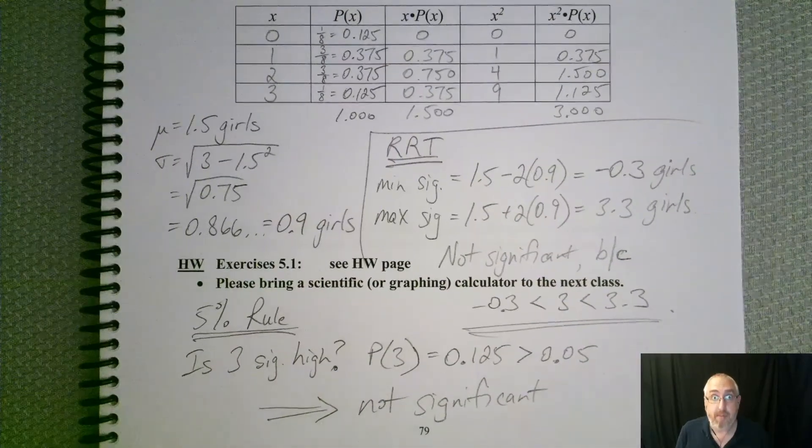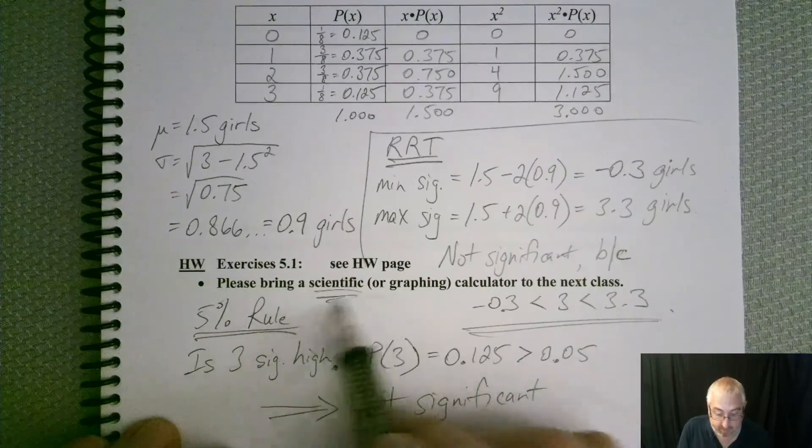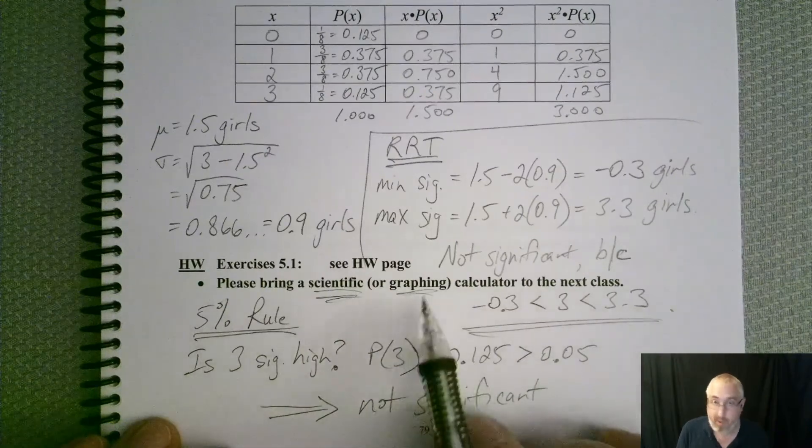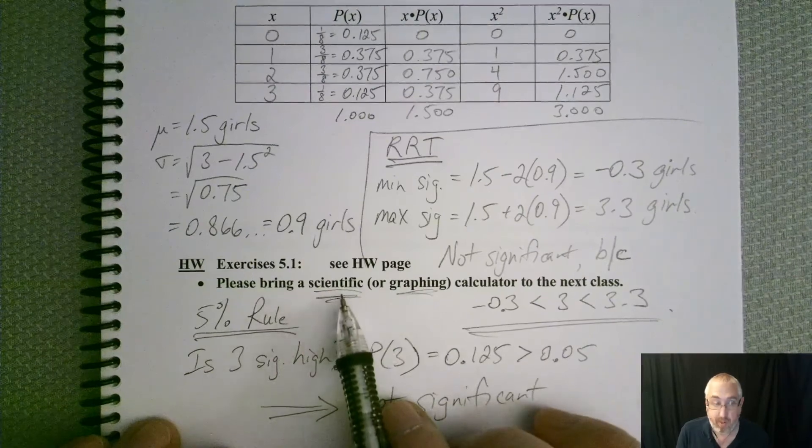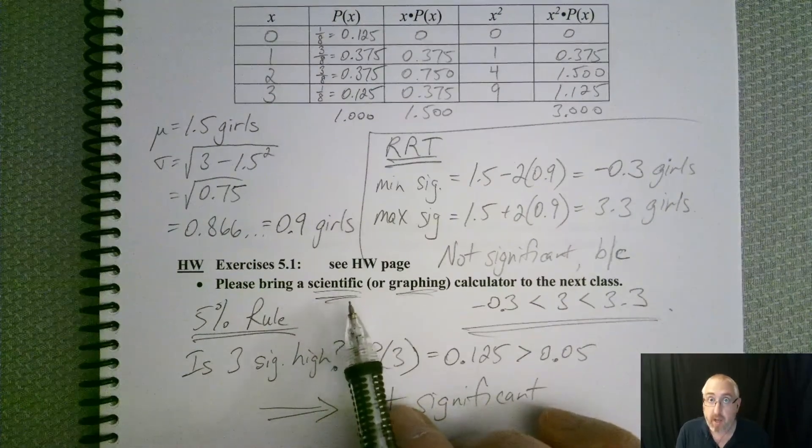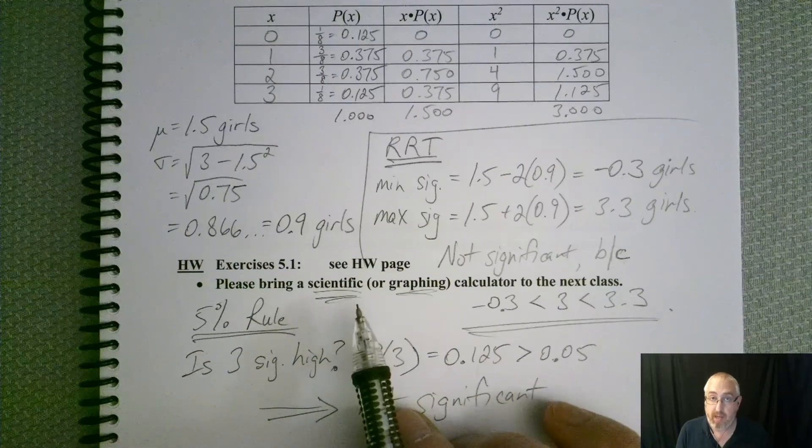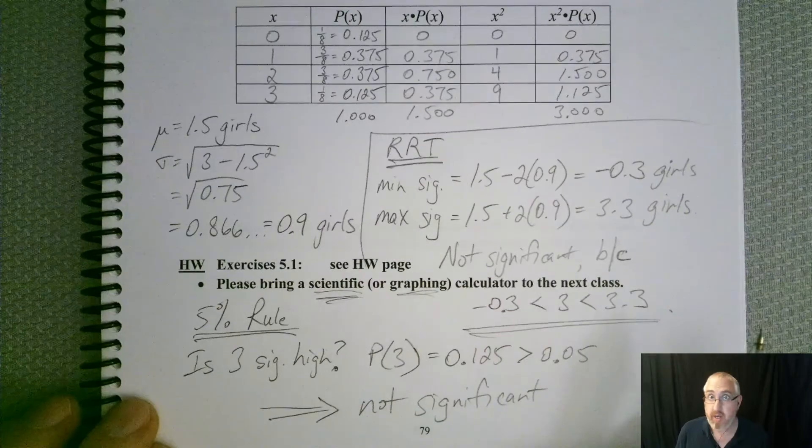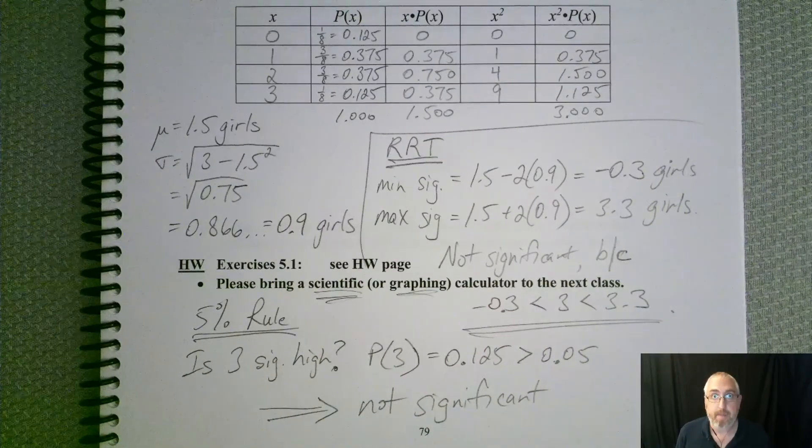So all right. So that wraps up this section. Make sure for the next section you bring that scientific calculator. Or if you have one already, a graphing one already, that's fine. But don't go out and buy one because they cost over $100. Scientific one will do the trick. And there's also free scientific calculator apps. If you want a link to one, just let me know and I can send it to you by email. It's free and it works. So all right. That wraps it up. See you in the next ones.